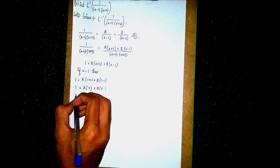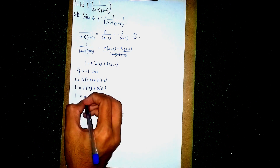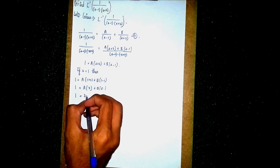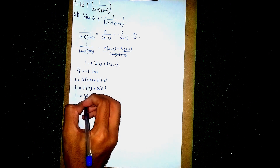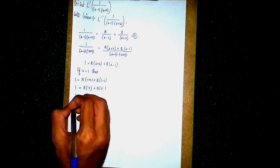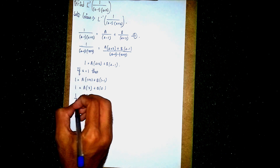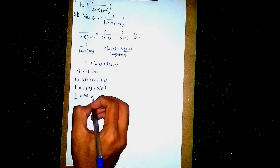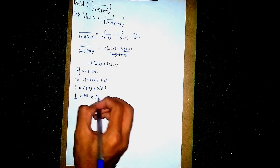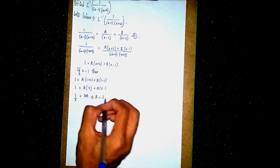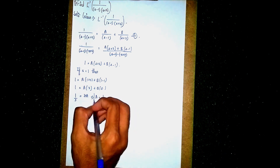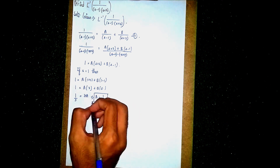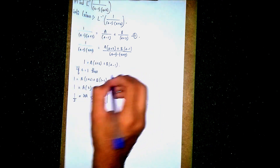So 1 is equal to 3A. Sending 3 to the other side as denominator, we get A is equal to 1 by 3. We have found the value of A.